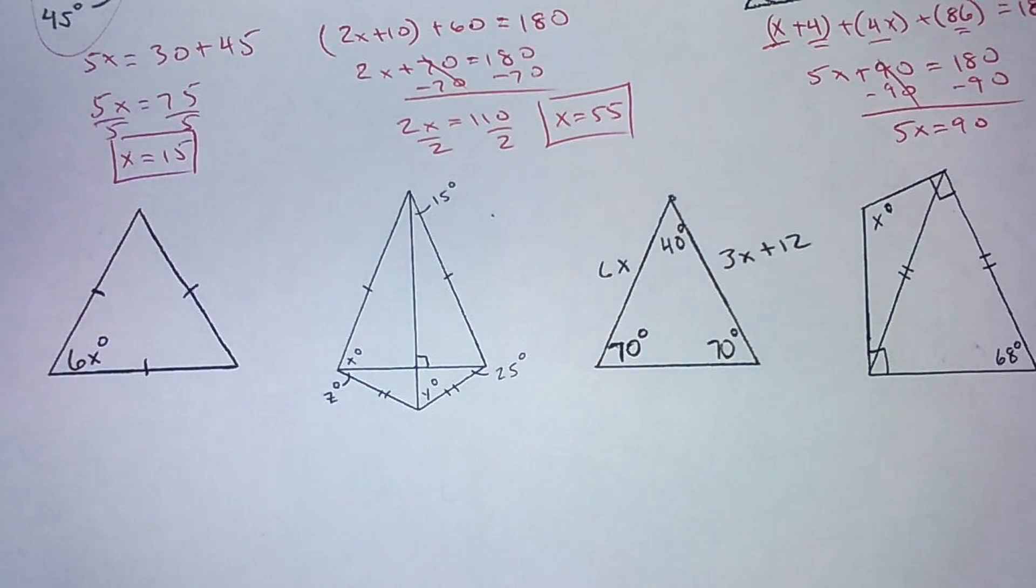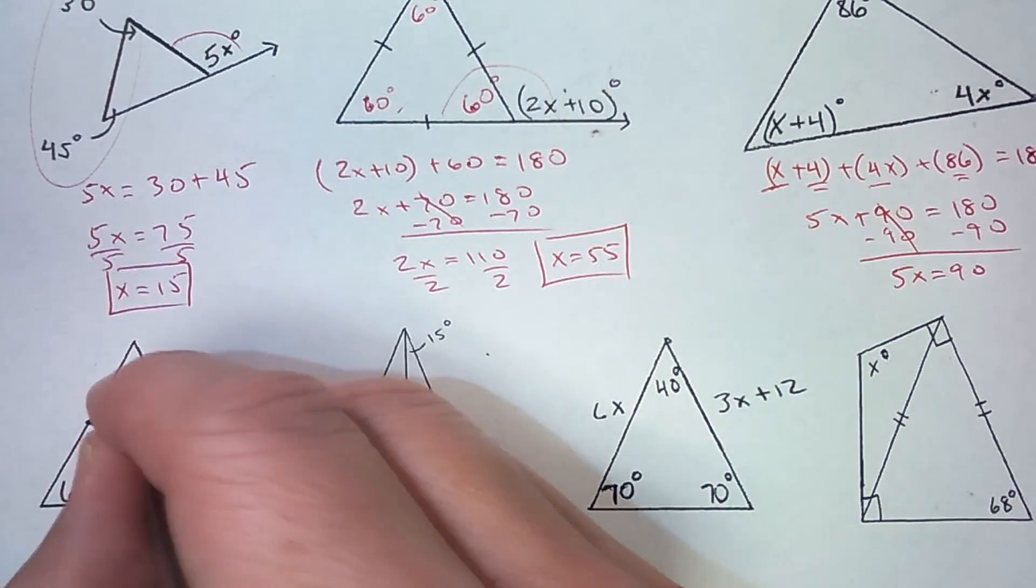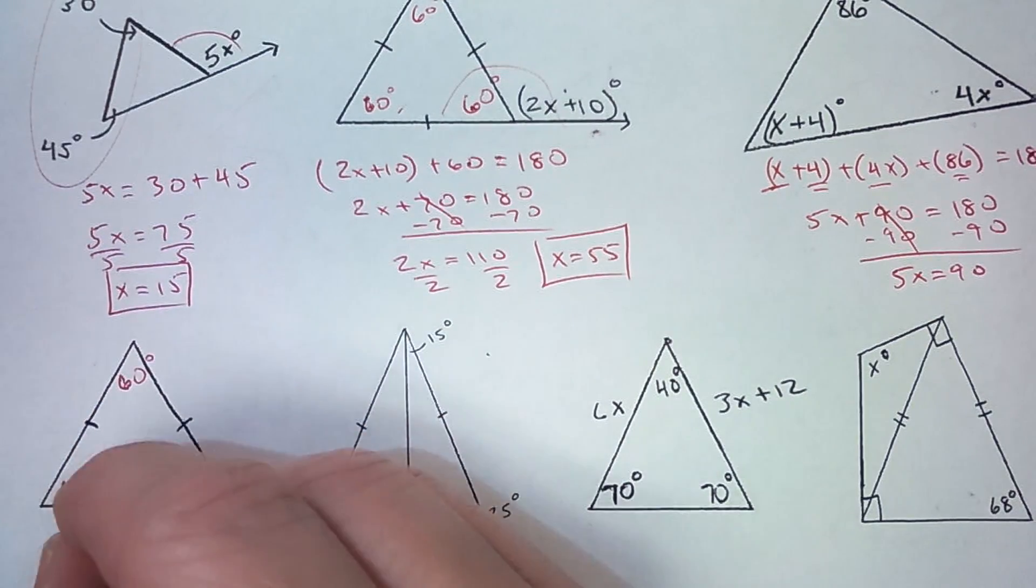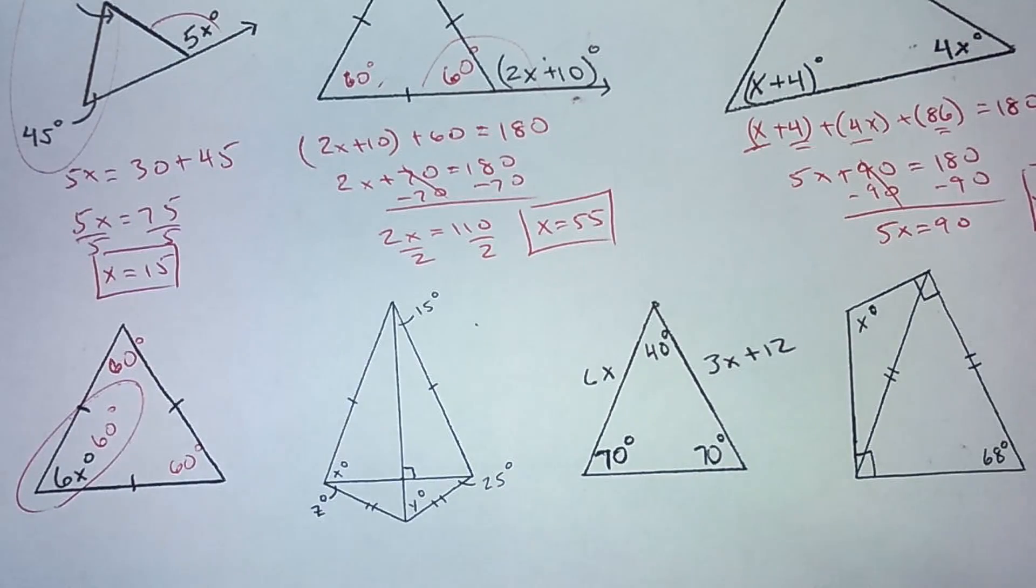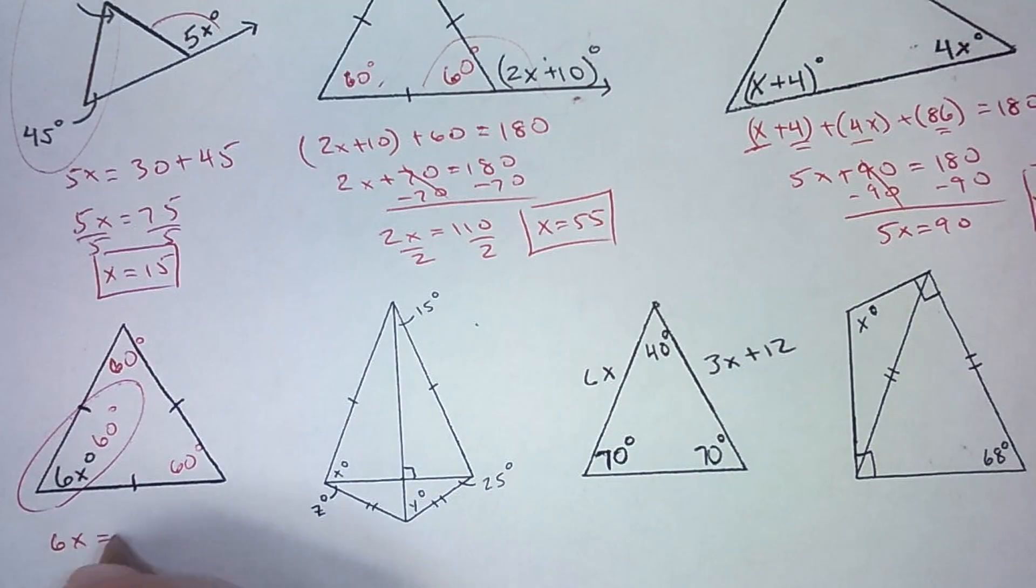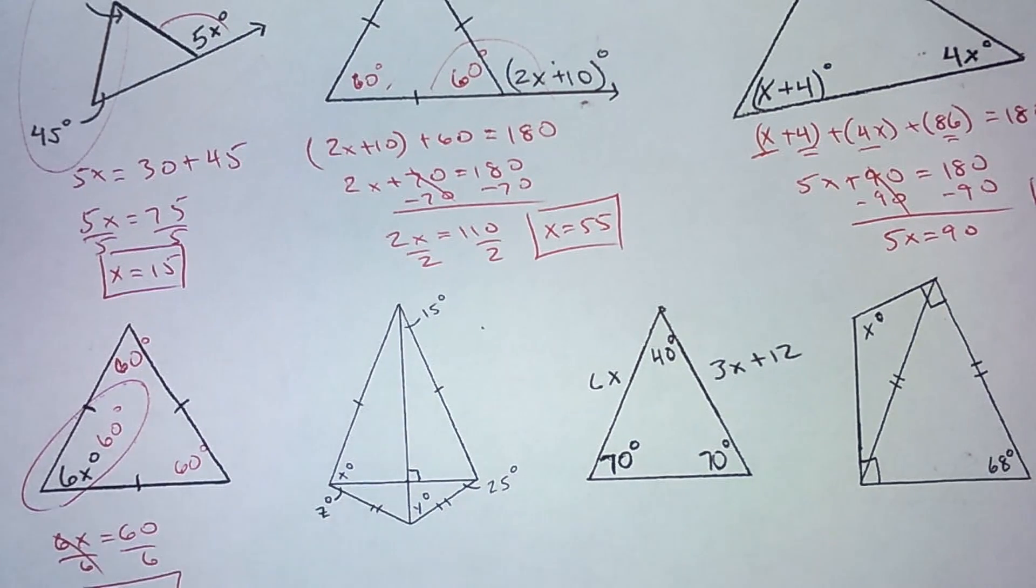Here is another equilateral triangle just like this one up here. An equilateral triangle is always 60, 60, 60. So I know 6x is equal to 60. And I can divide by 6. 60 divided by 6 is 10.